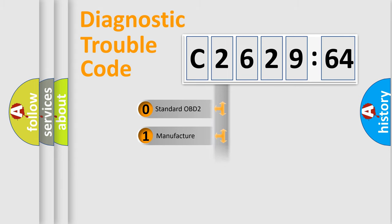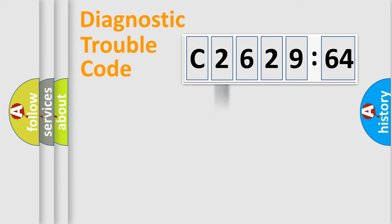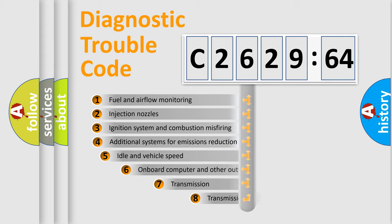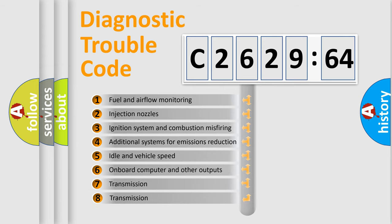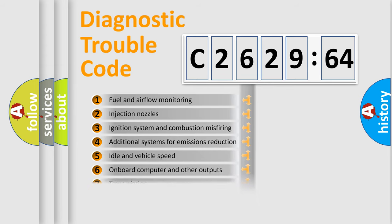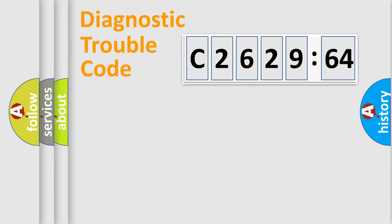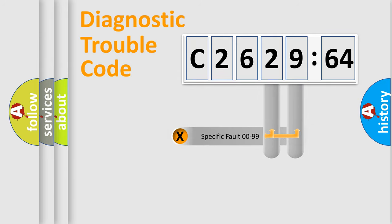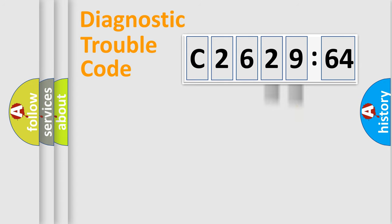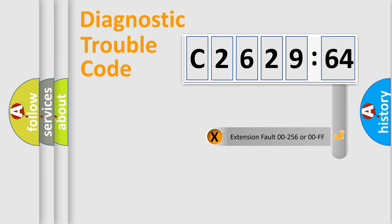If the second character is expressed as zero, it is a standardized error. In the case of numbers 1, 2, or 3, it is a more manufacturer-specific expression of the car error. The third character specifies a subset of errors. This distribution is valid only for the standardized DTC code, and only the last two characters define the specific fault of the group.